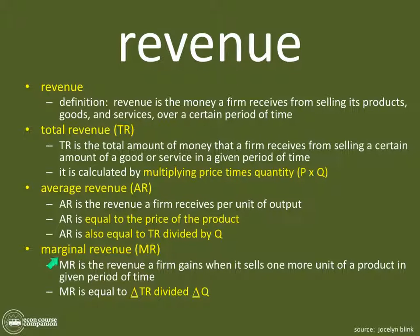The last term is marginal revenue. Remember, margin is always whatever you receive if you sell one more unit of output. So marginal revenue is the revenue a firm gains when it sells one more unit of a product in a given period of time. MR is always equal to the change in total revenue divided by the change in quantity. Marginal revenue is just how much you make on the next pizza you sell — if the price is $10 and I sell one more pizza, my marginal revenue is $10. It's a simple concept. Total, average, and marginal are three terms that come back in cost, revenue, and production.